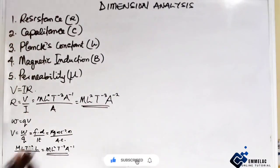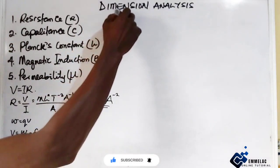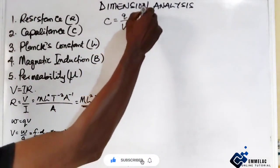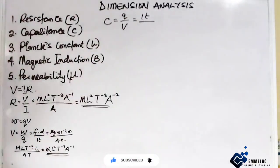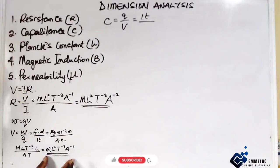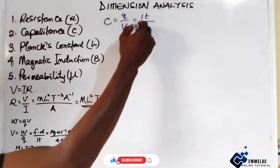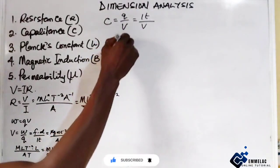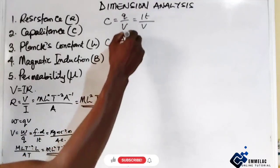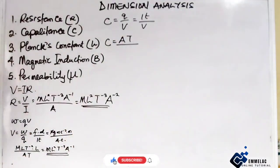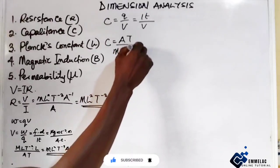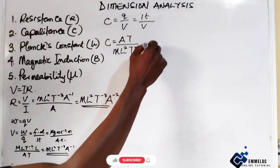Now let us move to capacitance. Recall that C equals Q over V for a capacitor. Here we have the quantity of charge Q equals IT, all over V. Substituting the dimensional formula for V, which is M, L raised to the power of 2, T raised to the power of minus 3, and A raised to the power of minus 1, we get C equals AT over that expression.